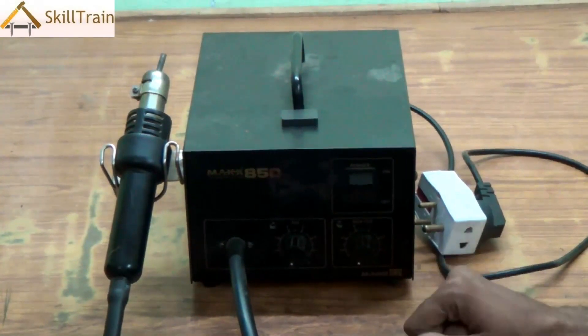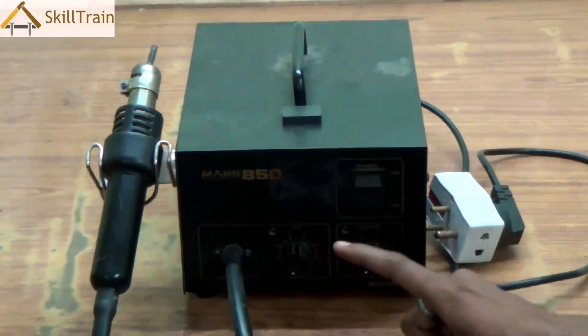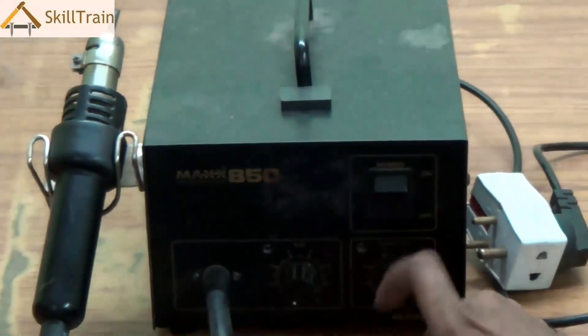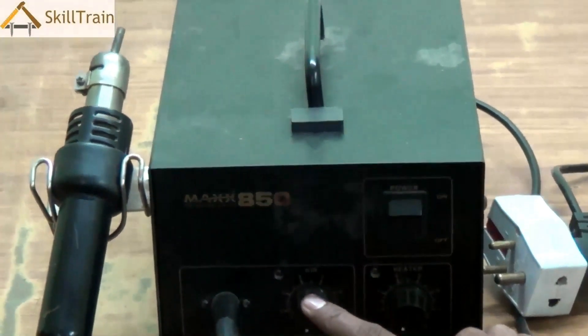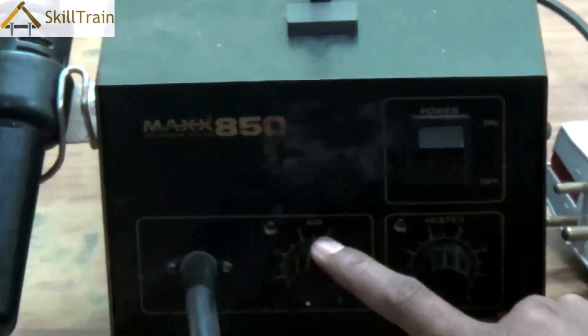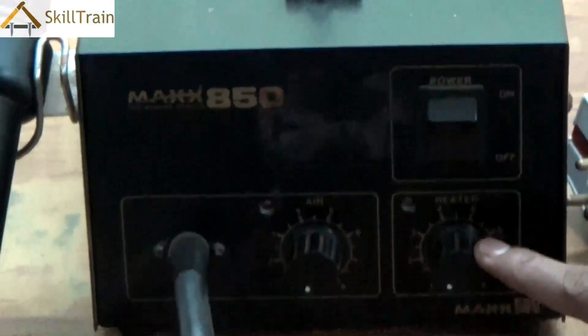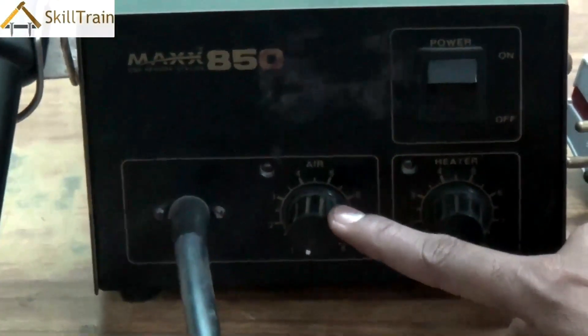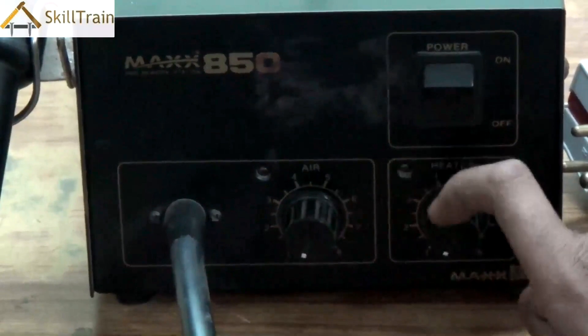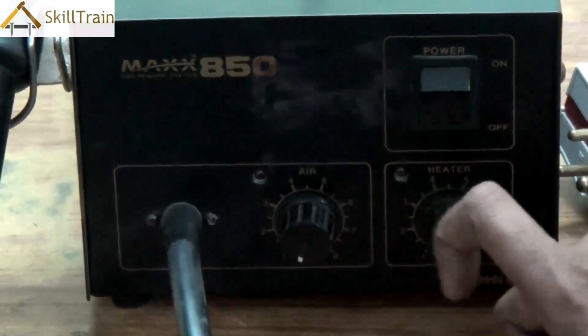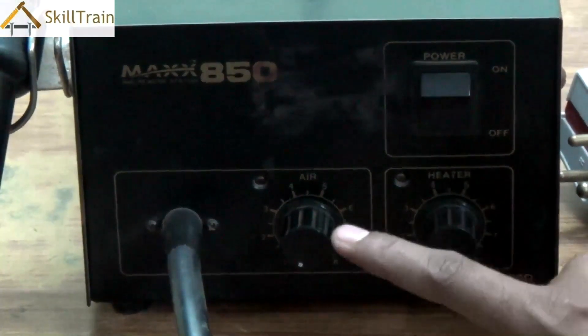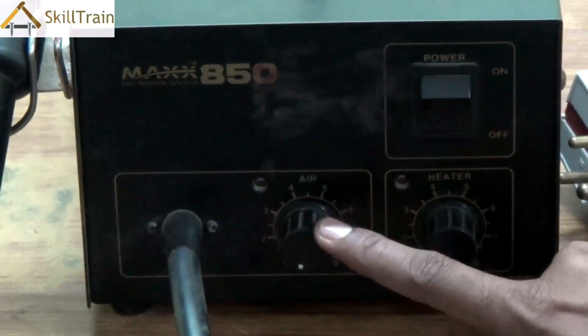Now first and foremost you will see two knobs placed in front. One of the knobs you will see it written as air and the other knob reads as heater. So essentially the hot air gun as we spoke earlier is what releases hot air which helps us in placing and releasing components.